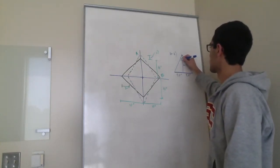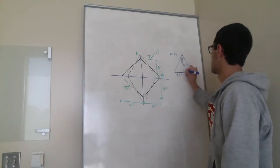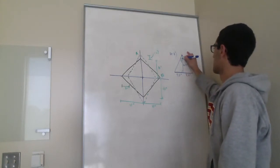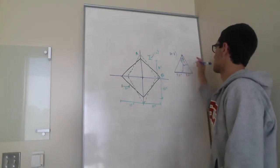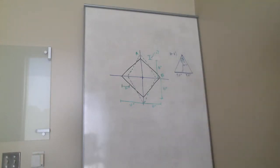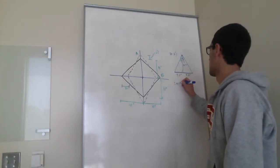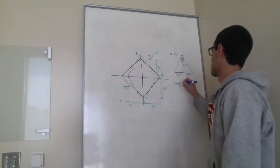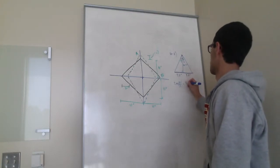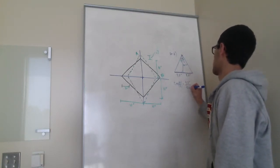We're going to label that as theta over 2, and that is theta over 2. And so we're going to do inverse tangent, theta over 2, equals 9.7 over 10.2.